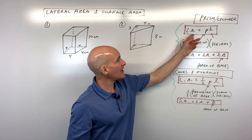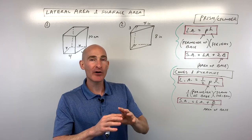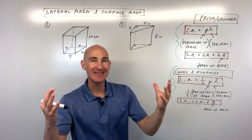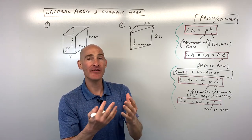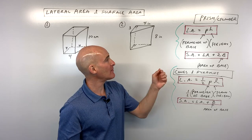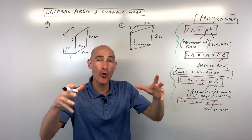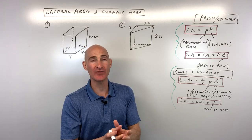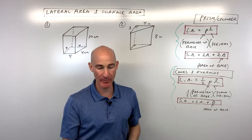When we talk about lateral area, we're talking about the area of the sides. When we talk about surface area, we're talking about the total area — not only the sides, but the top and the bottom as well.